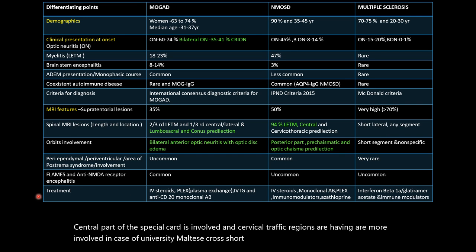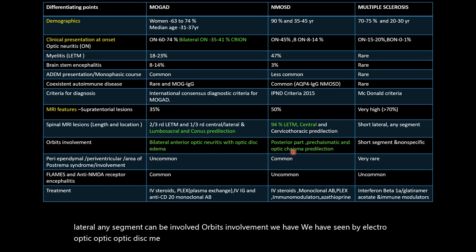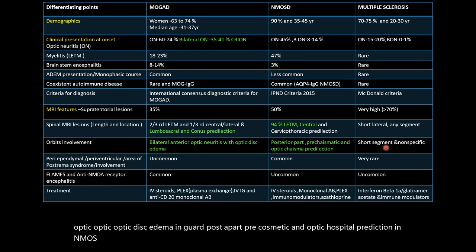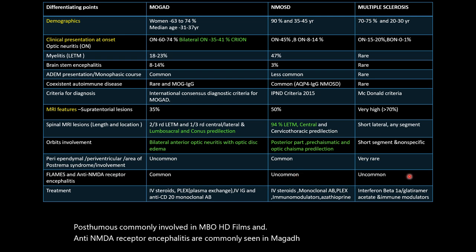Orbit involvement: bilateral anterior optic neuritis with optic disc edema in MOGARD; posterior, pre-chiasmatic and optic chiasmatic predilection in NMOSD; short segment non-specific involvement in MS. Periependymal surface, periventricular surface, and area postrema are commonly involved in NMOSD. FLAMES and anti-NMDA receptor encephalitis are more commonly seen in MOGARD.